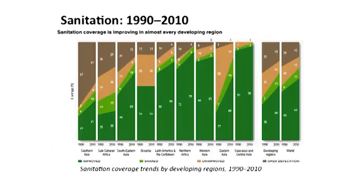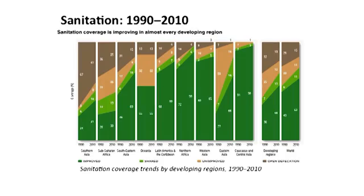This next figure shows changes in improved sanitation coverage over the 20-year period from 1990 to 2010 by region of the world. The dark green shows the percentage of households with improved sanitation, light green shows use of shared sanitation facilities, and the orange and brown colors show unimproved and open defecation respectively. There have been rapid gains in East Asia over this period. Other regions are making slow progress, including sub-Saharan Africa. South Asia is making progress but still has a long way to go.